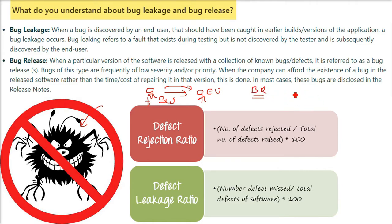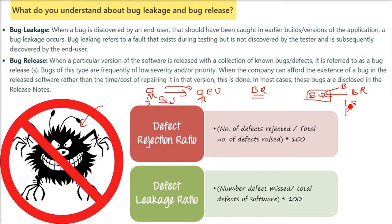When a particular version of the software is released to the user with a collection of known bugs and defects, it is referred to as a bug release. Bugs of this type are frequently of low severity or low priority. When the company can afford the existence of a bug in the released software rather than the time cost of repairing it in that version, it is just released. In most cases, these bugs are disclosed in the release notes.